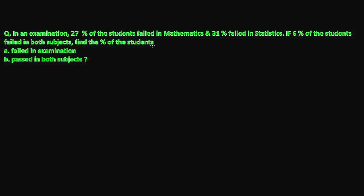There are three points we need to give. First punch: write all the given information. Second punch: write in the Venn diagram. Third punch: we need to do some calculations. So the first punch I'm going to give to this question means I'm going to write all the information.